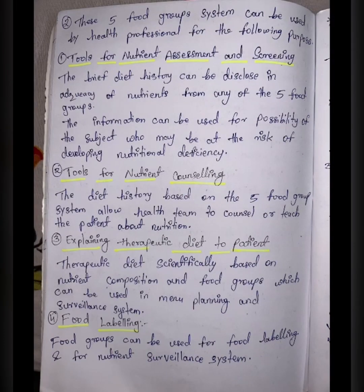These 5 food group systems can be used by health professionals for the following purposes: First, as tools for nutrient assessment and screening — a brief diet history can disclose adequacy of nutrients from any of the 5 food groups and identify subjects at risk of developing nutritional deficiency. Second, as tools for nutrient counseling — diet history based on the 5 food group system allows the health team to counsel or teach patients about nutrition.